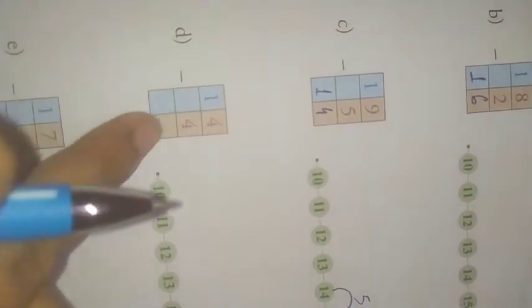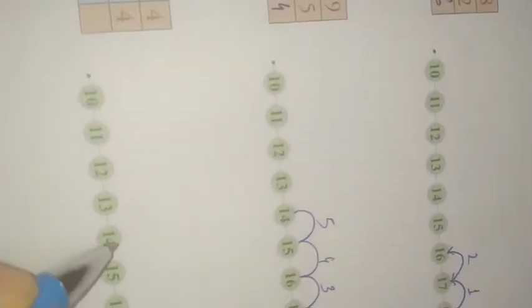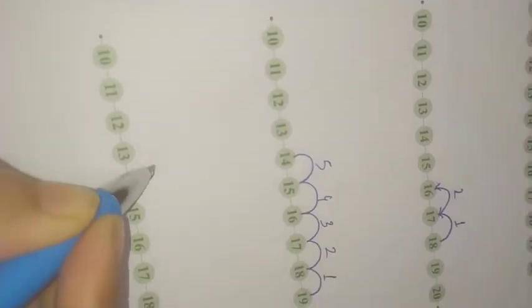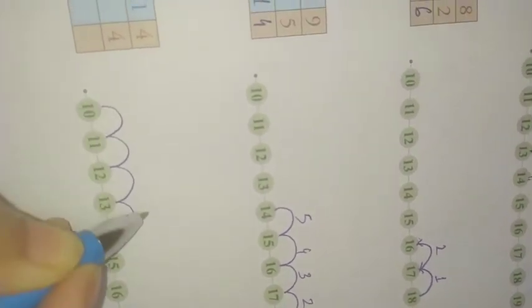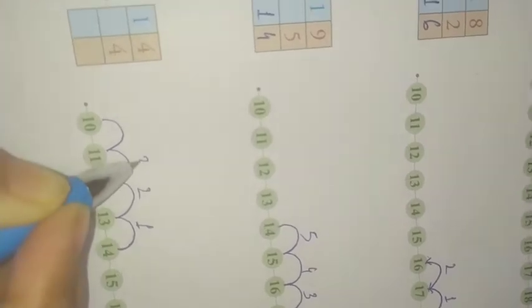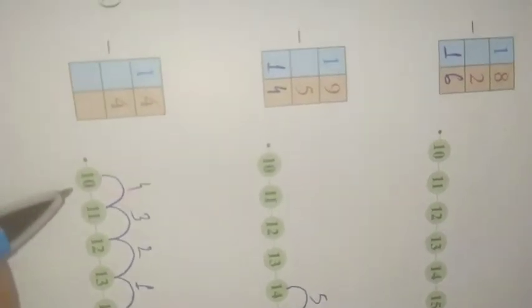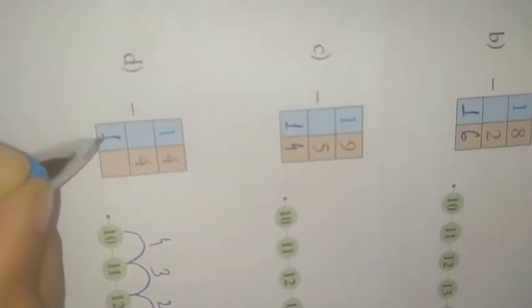Now number D. 14 minus 4. You have to start from 14 and count backward 4. 1, 2, 3, 4. So which number you reach? You reach 10. 14 minus 4 is equal to 10.